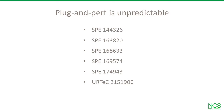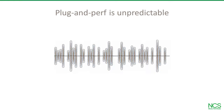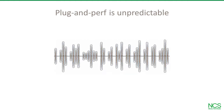Studies using fiber optics, production logs, and downhole video have revealed that more than 30 percent of clusters contribute very little or nothing to production. So the first plug-and-perf well might look like this, but the next one could look different, and the third one different again — and the fourth well will still be different. These completions are not predictable, verifiable, or repeatable, which means they aren't really optimizable.